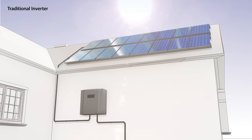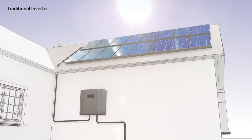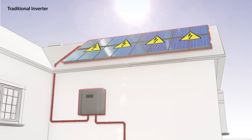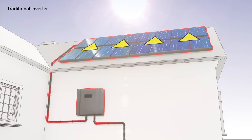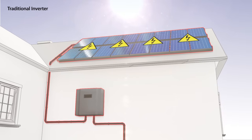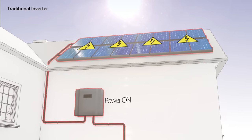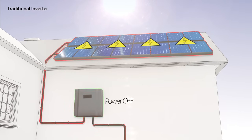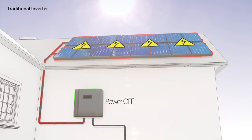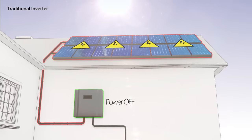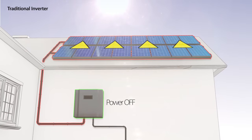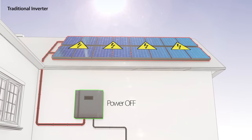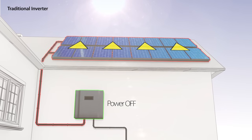The DC cables, which connect the panels to a string, carry high voltage as long as the sun is shining. The traditional inverter cannot shut down the panel's DC voltage, and therefore poses serious risks to installers and firefighters.